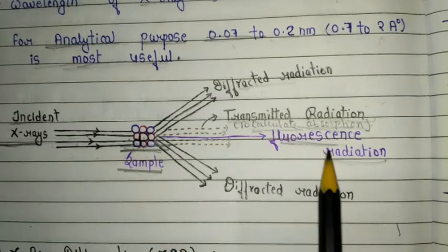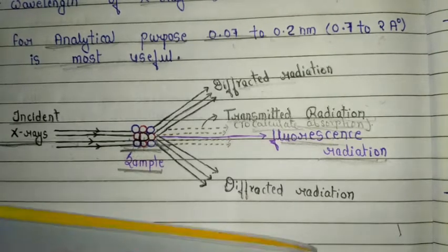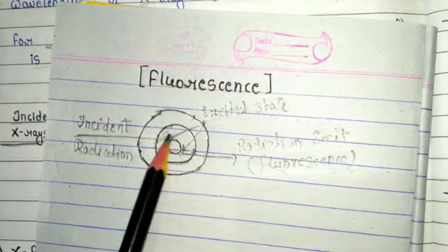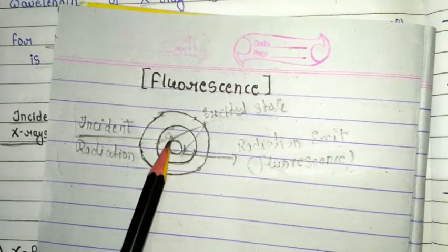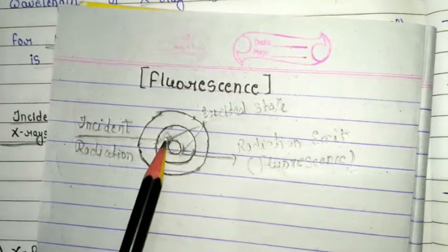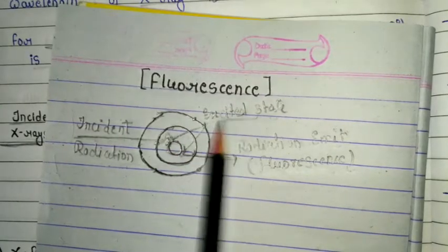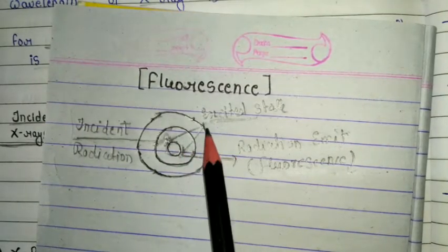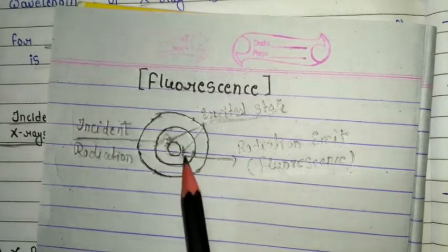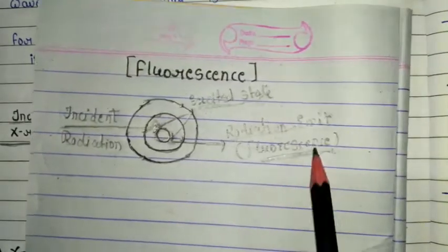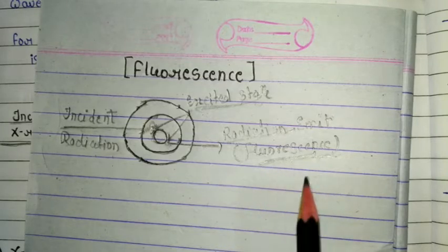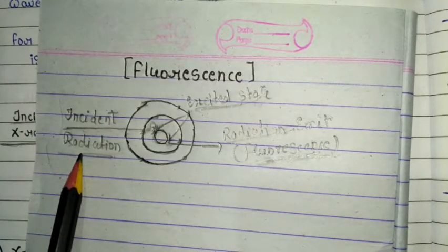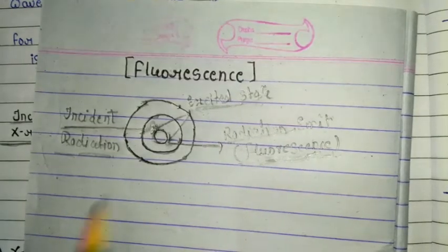The third is fluorescence radiation. To understand fluorescence we need to discuss it in a diagrammatic way. When incident radiation strikes an atom of the sample, and electrons are present in that atom, the incident radiation strikes an electron, causing it to move to an excited state and jump from the inner shell to the outer shell. After some time, this excited electron comes back down to the inner shell and emits some radiation — this radiation is called fluorescence. The wavelength of this fluorescence is longer than the incident radiation.